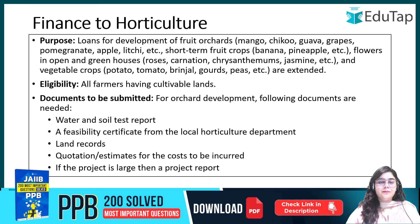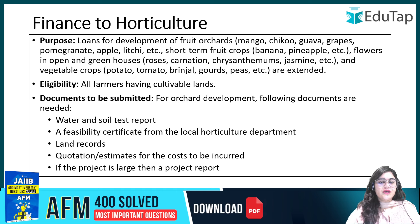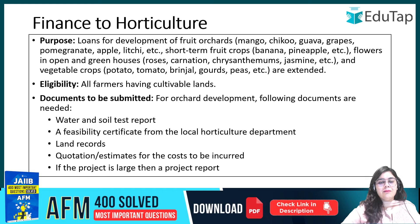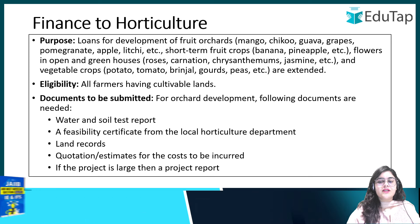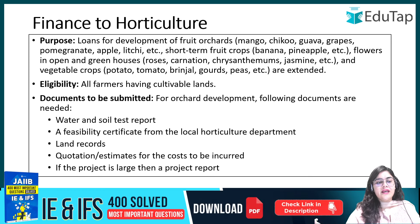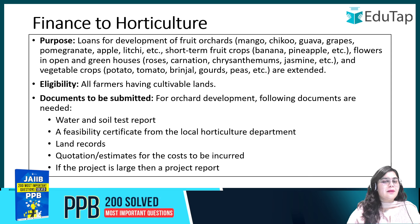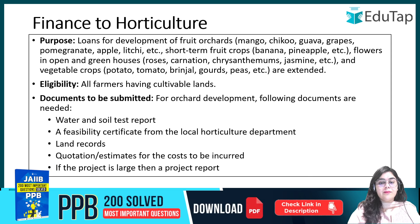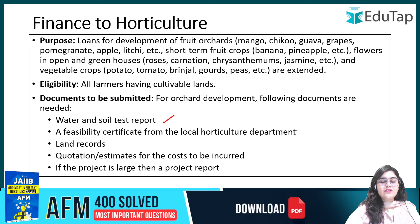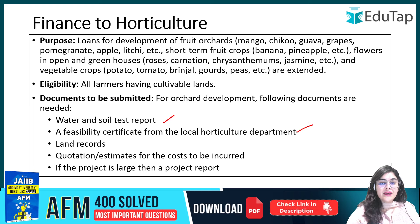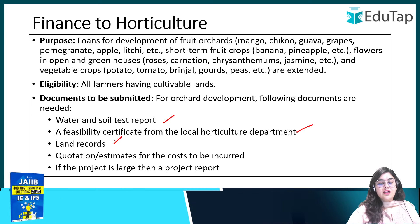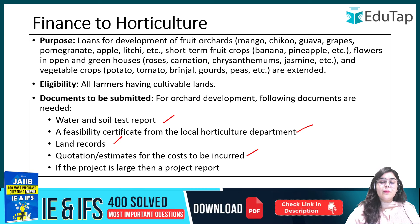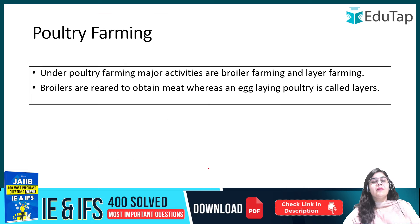If you want to take a loan for horticulture — like fruits, flowers, or vegetables — you can take a loan for short-term crops such as banana, pineapple, flowers, or greenhouse and vegetable cultivation. You need to have cultivable land. You have to provide a water and soil test report from the local horticulture department, a feasibility certificate, land records, cost estimates, quotations, and for large projects, a full project report to the bank.